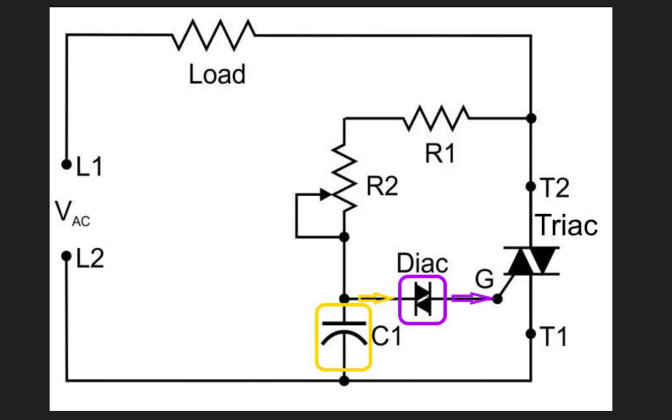Current pulses are created by the diac each time the capacitor voltage reaches either the positive or negative breakover voltage of the diac. These pulses are used to trigger the triac. For most commonly available diacs, the breakover voltage typically ranges from about 25 to 35 volts.